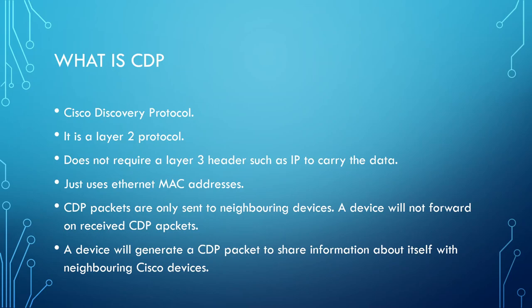CDP just uses Ethernet MAC addresses or some sort of Layer 2 information to actually move that CDP data from point A to point B. CDP packets are only sent to neighboring devices. So if a local switch receives a CDP packet on an interface that has CDP enabled, that switch is going to process that CDP information but it will not forward it out any of its other interfaces to any other neighboring device.